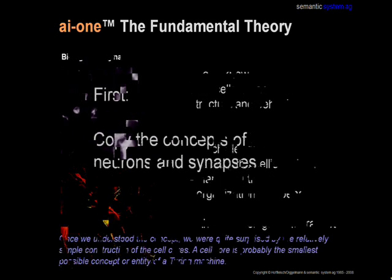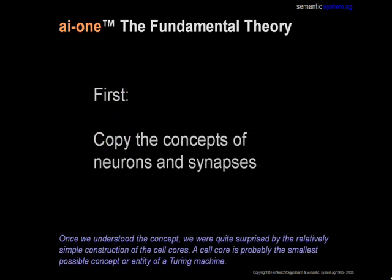The first step was to copy the clever concepts of the neurons and synapses. Once we understood the concept, we were quite surprised by the relatively simple construction of the cell cores. A cell core is probably the smallest possible concept or entity of a Turing machine.